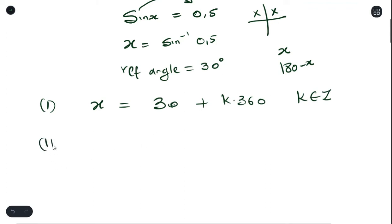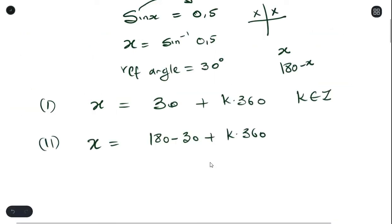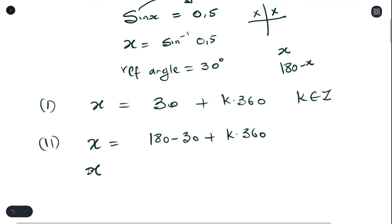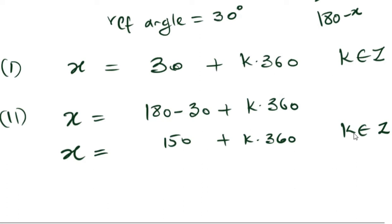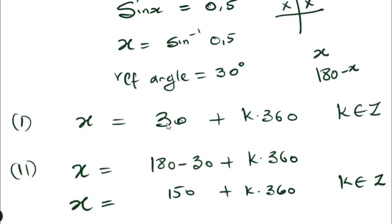For the second answer, we use the equation of the second quadrant: x = 180 − 30 + k360, giving x = 150 + k360. Don't forget to always put 'k is an element of integers' at the end of each step. Our two final answers are x = 30 + k360 and x = 150 + k360.